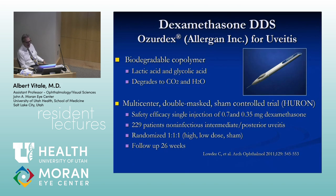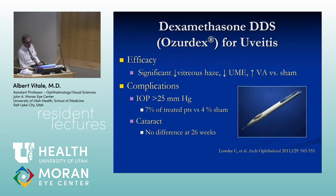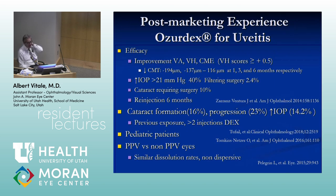The Ozurdex dexamethasone delivery system was approved for use in uveitis through the Huron trial. It had efficacy in reducing haze and macular edema and improving vision compared to sham, with minimal intraocular pressure elevation and cataract — but this was a six-month trial, and steroid responders were excluded. Post-marketing experience shows efficacy in patients with even greater inflammation, with reduction of macular thickness, but about 40% of patients had IOP elevation and more instances of filtering surgery and cataract surgery.